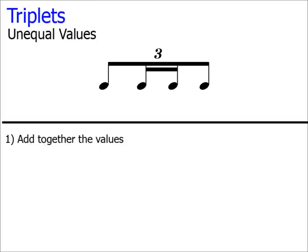Let's work through the steps you'll need to take to work out the rhythmic value of this triplet. Firstly, add together the values. Half plus a quarter plus a quarter plus half equals 1 and a half. Make a note of that number. Secondly, divide your answer by 3. Always by 3 when looking at triplets. So 1 and a half divided by 3 equals a half.